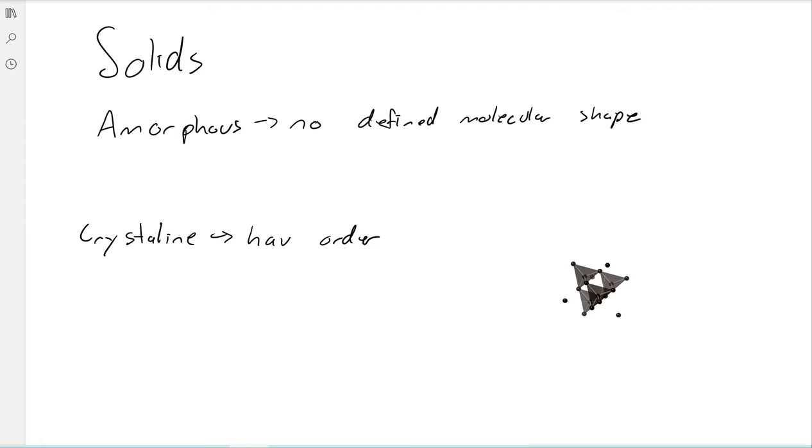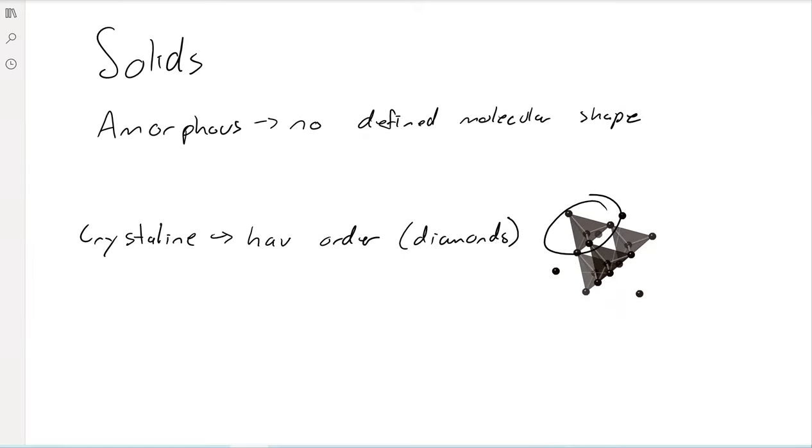A popular example is diamonds. Here these little black balls represent carbon atoms. You can see they are in tetrahedral shapes—that's the structure of diamonds.